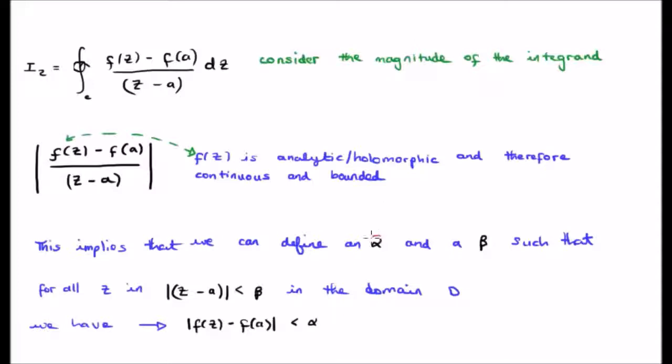What this means is as follows. We can define a value alpha and a value beta such that for all z in the magnitude of z minus a, they're going to be less than beta in the domain. Therefore, the magnitude of the numerator, which is f of z minus f of a, is going to be less than alpha. Now, that might seem a bit convoluted. We'll discuss it again now.